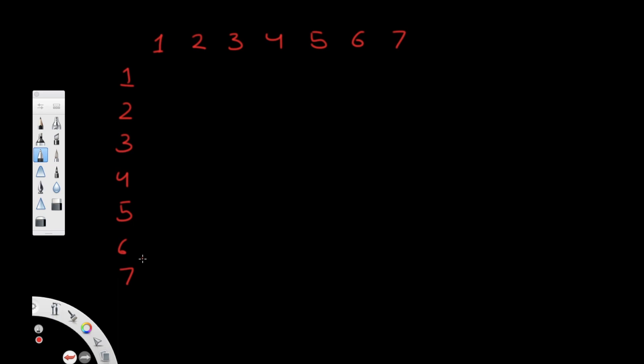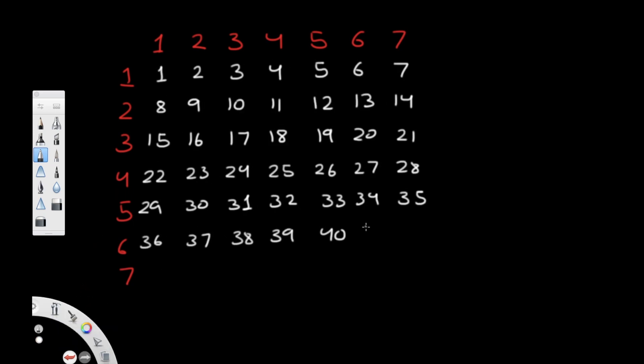So this over here is our 7 by 7 matrix. We're going to fill it with values starting at 1 and keep going until we reach the end. As you can see, our 7 by 7 is completely filled and our last number is obviously 49.